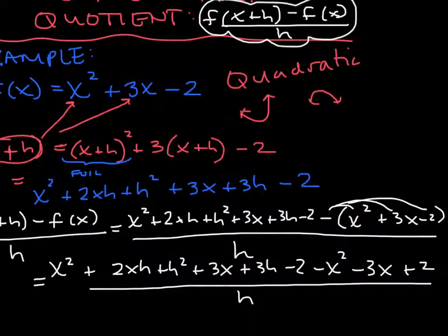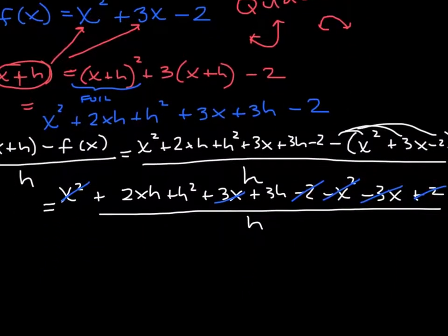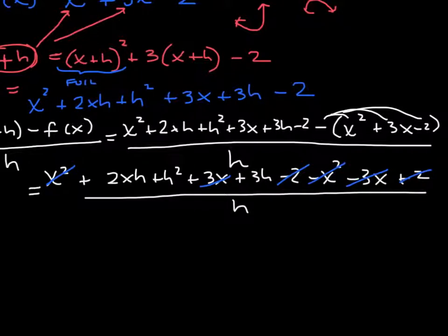So I see x squared and x squared, x² - x² drops to zero. Then I have my 3x and my -3x drops out. I have a -2 and a +2 drops out. So I'm just going to take what I have right here.